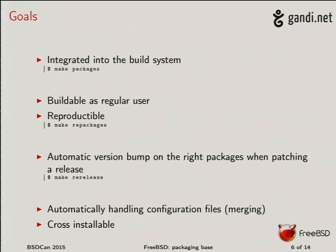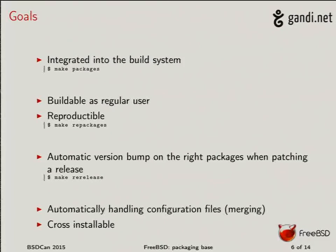We also want to be able to upgrade an ARM box through cross-installation. What I do right now: I have a Panda board at home with an SD card running FreeBSD set up with packages. If I want to upgrade, I build a new package on my AMD64 box, remove the SD card from the Panda board, put it in my laptop, mount it, run 'package upgrade -r this_directory,' unmount, and reboot. It's ready to be usable on the Panda board.